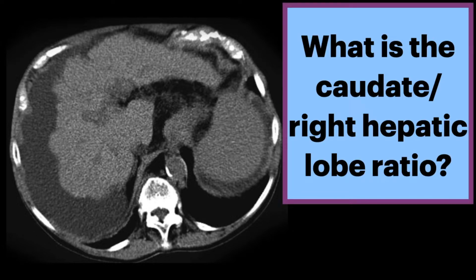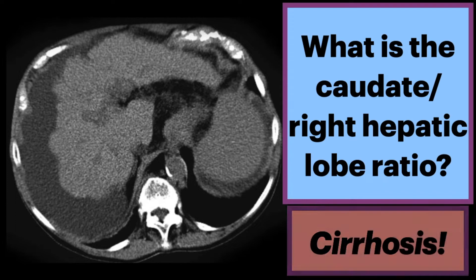What is the caudate to right hepatic lobe ratio? A high ratio is very specific for cirrhosis. More specifically, a ratio greater than 0.75 is 99% specific for cirrhosis.